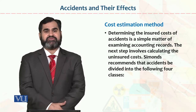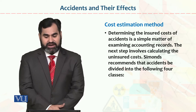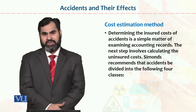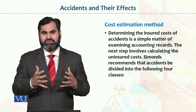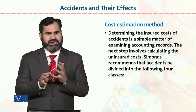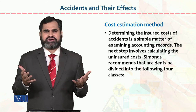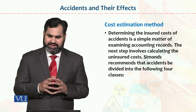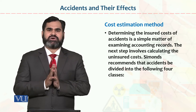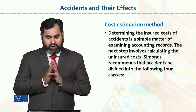The cost estimation method can be verified. Determining the insured cost of accidents is a simple matter of examining accounting records. We can calculate the insured cost using accounting methods — just as in accounting, material, labor, and factory overhead are summed to calculate the cost of production for any product. Similarly, using accounting methods, we can calculate the cost of accidents.